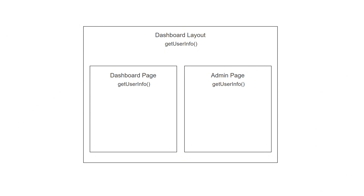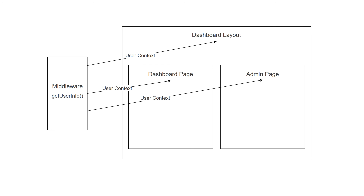Obviously this setup is not efficient, it's not DRY, and we can improve on that. The way we can do it is by using middleware. In this middleware we will check if the user is logged in — if not, we'll redirect to the landing page. But if the user is logged in, we'll get the access token from the session and call the getUserInfo function. Then this middleware will pass the user context to the dashboard layout, dashboard page, and admin page, and those pages will display the user information.